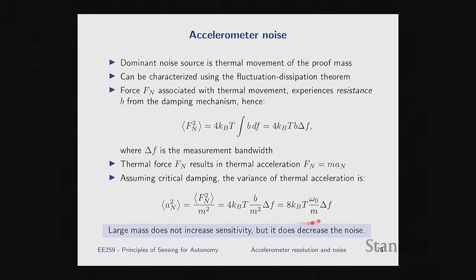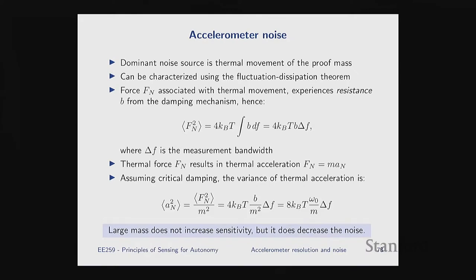Remember that generally the value of the proof mass M does not affect the sensitivity of the device — sensitivity is 1 over omega squared, which is dictated by the application. But we see that for noise, it actually makes a difference. A large mass does not increase sensitivity, but it does decrease noise — that's very important. So if you want to design a device for very low noise applications, you want to design it with a larger value of the proof mass.